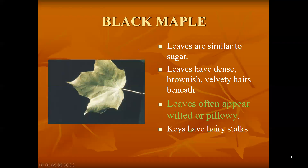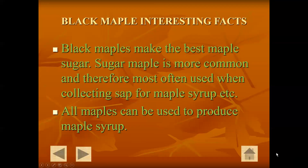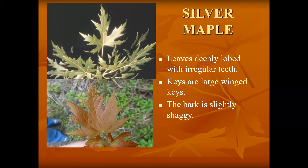Black maple has a pillowy look — flattening it out for a maple leaf collection would be difficult because it tends to crease. Normally it's pillowy in its three main sections. Black maples make the best maple sugar, though sugar maple is the most common and therefore most often used to collect sap for maple syrup.